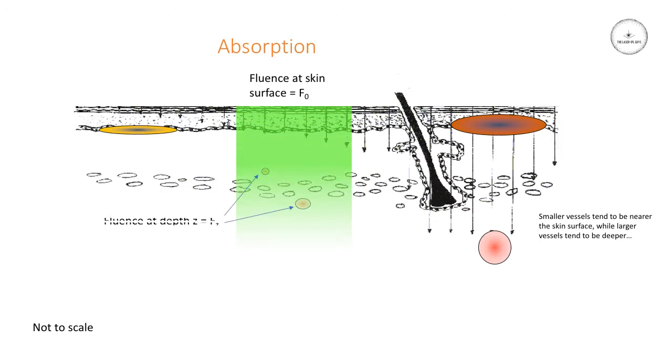If we fire a fluence at the skin surface of F0, then by the time it reaches any depth Z, the fluence will have dropped significantly. Typically in the skin, the fluence can drop exponentially or greater. At some depth, the fluence will be perhaps 50% or even less of the value it was at the surface.